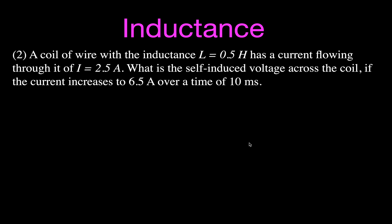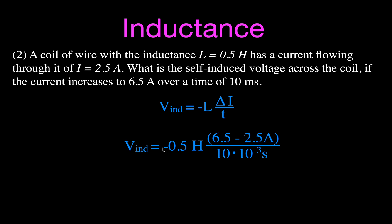Example two: calculate the self-induced voltage for a coil with inductance 0.5 Henry, where the current increases from 2.5 amperes to 6.5 amperes over 10 milliseconds. Using V equals minus L times delta I over delta t: the change in current is 6.5 minus 2.5 equals 4 amps, and 10 milliseconds equals 10 times 10 to the minus 3 seconds. The result is a self-induced voltage of minus 200 volts — it's negative because it's opposing the increasing current.